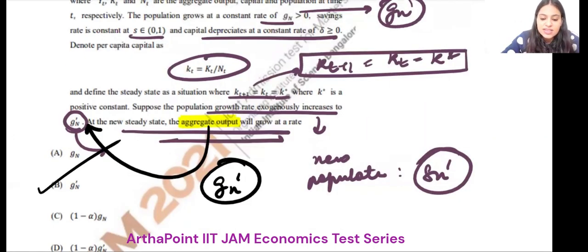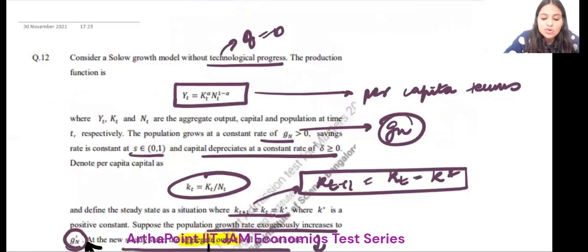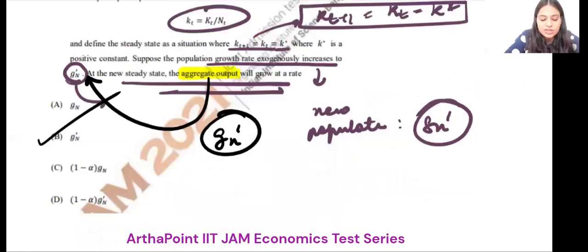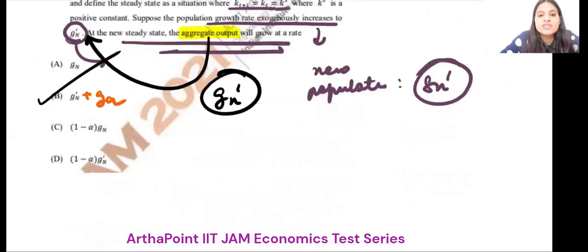Supposedly, it would have said that technology is growing at the rate maybe GA. Then you would have added technology growth rate here, because then it is the sum of the growth rate of technology and labor.